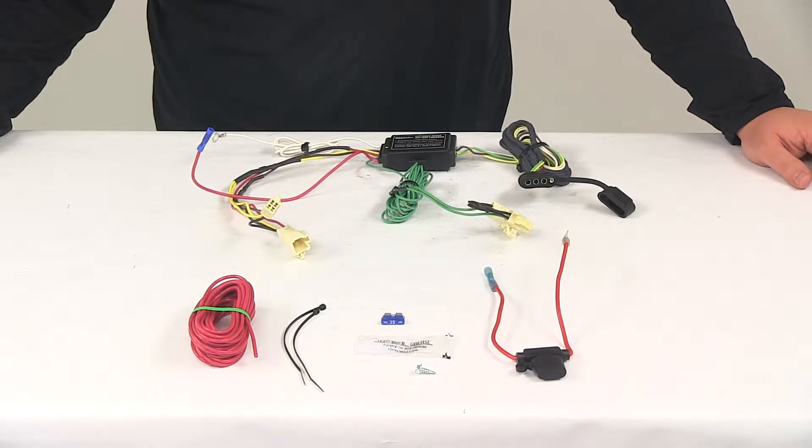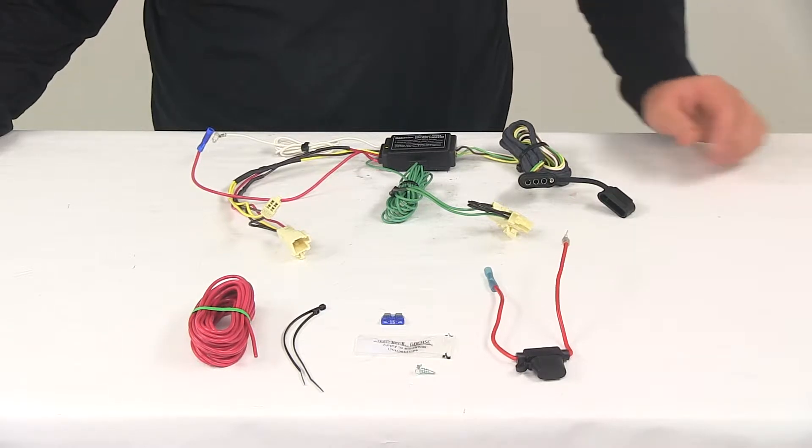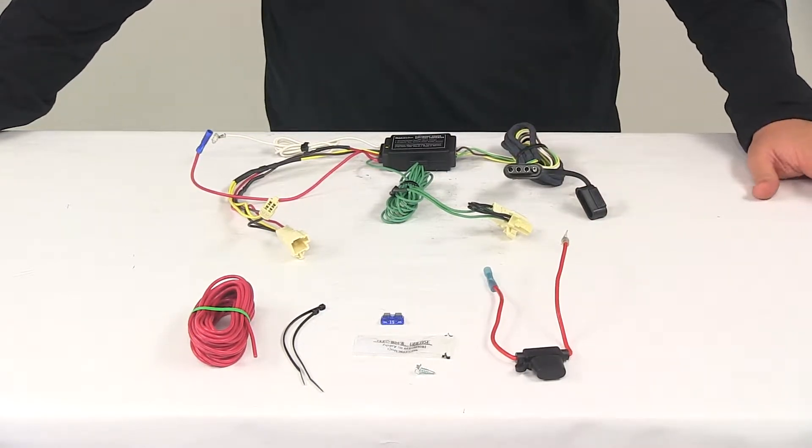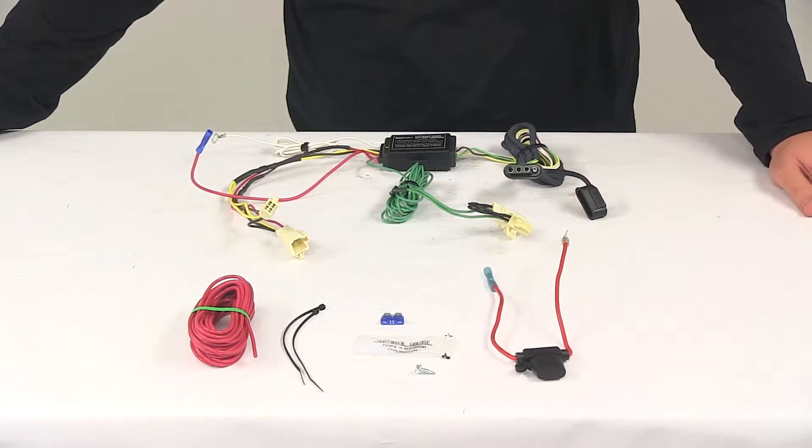Today we're going to be taking a look at the Hopkins plug-in simple vehicle wiring harness with the four pole flat trailer connector. This product fits certain years of the Toyota Corolla. You can use the vehicle fit guide located at eTrailer.com to ensure that this is a fit for your vehicle.